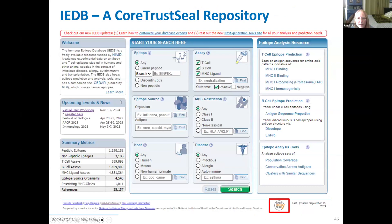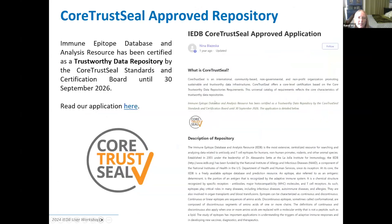Lastly, the IDB is a CoreTrustSeal repository. There's a little icon at the bottom of the page that tells you that, indicating the IDB is trustworthy. There was a lot of work and application involved in demonstrating our trustworthiness. If you click on the icon at the bottom of the IDB page, it takes you to the information and details about how we became officially trustworthy — it just lets you know that you can count on us.